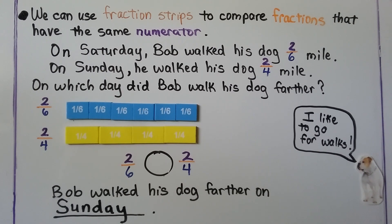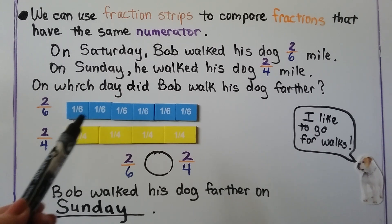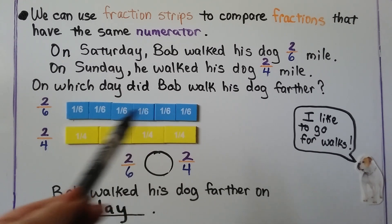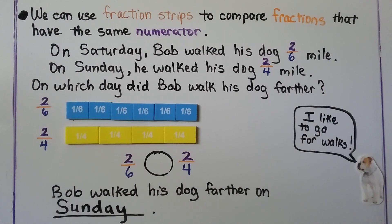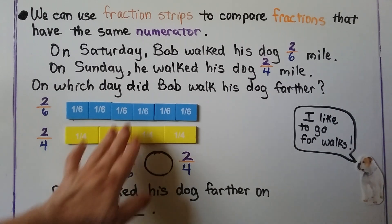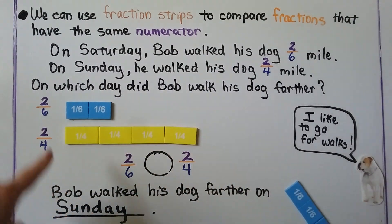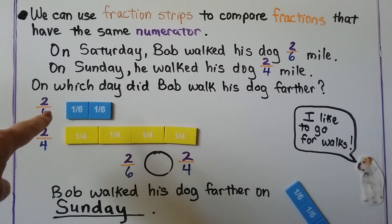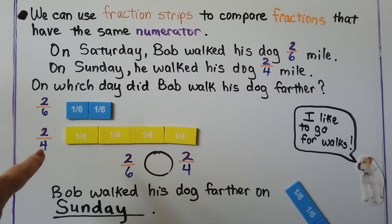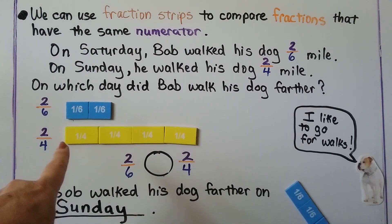Here's a whole — six-sixths. We need two-sixths, so we take the others away. That's how far he walked on Saturday. On Sunday he walked two-fourths. Here we have four-fourths.